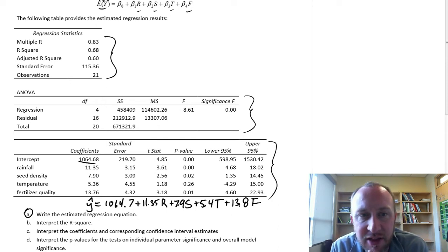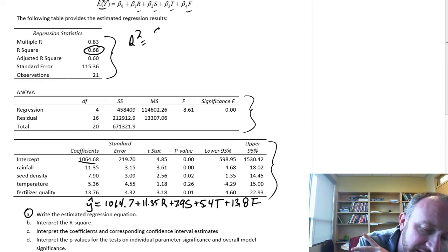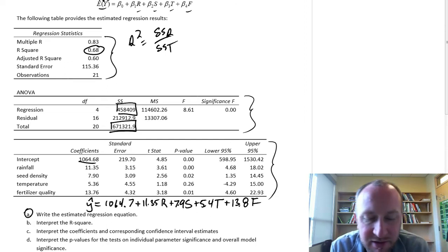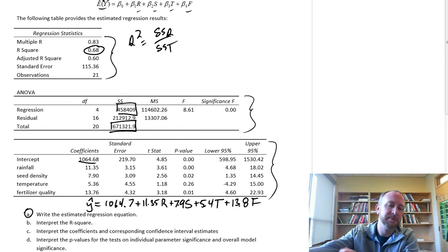Part B, interpret the r squared. Again, we have our r squared value, which is SSR divided by SST, so here's SSR, and SST is right here. This tells us of the total variation in our dependent variable, which in this case is our wheat yield,